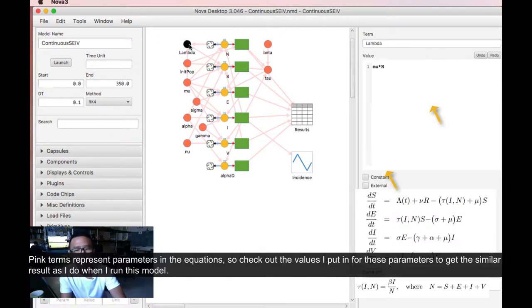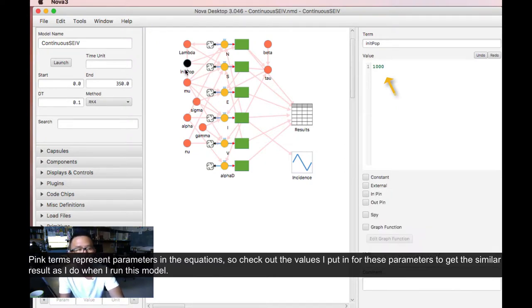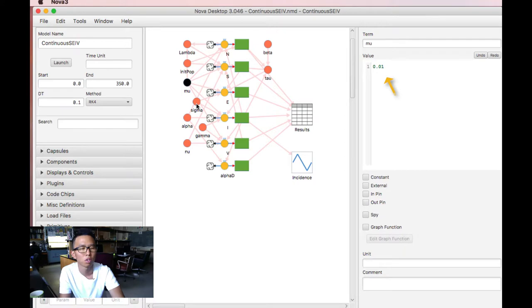The pink terms represent the parameters in the equation. Check out the values I put in for these parameters to get the similar result as I do when I run this model. So this is 1,000, 0.01, 0.3, and 0.05.